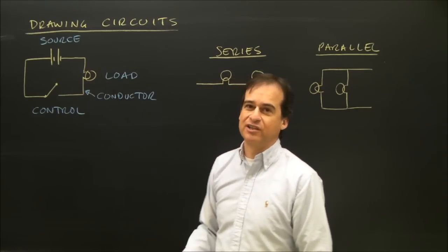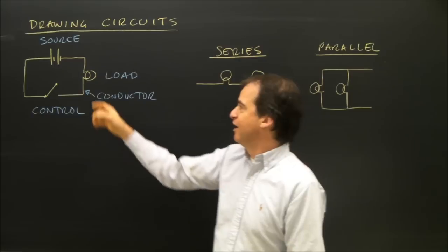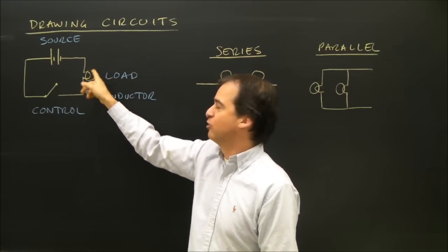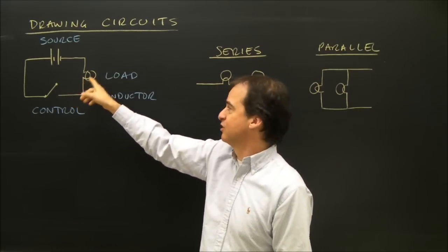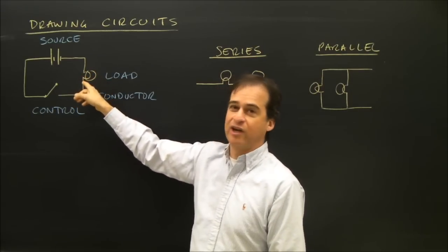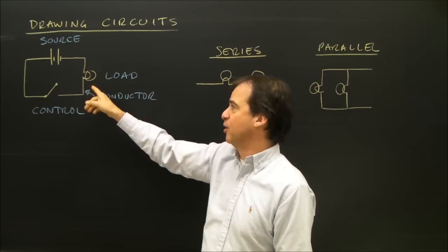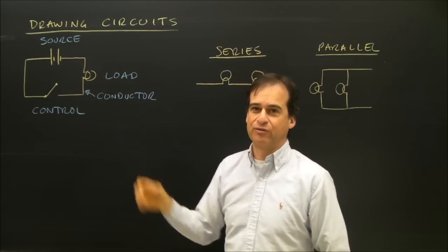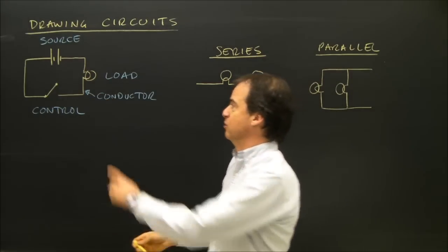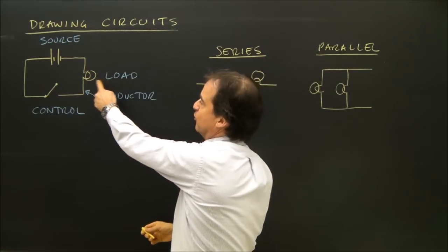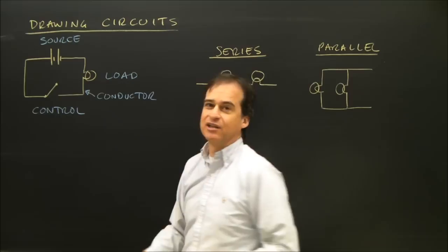Then there's a load. That's the thing that uses the electricity. And in this case, I've drawn what I would consider a good diagram for a light bulb, although there are different versions of drawing them. But that's the load — in this case, it's a light bulb.